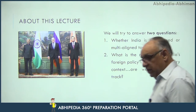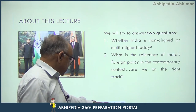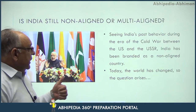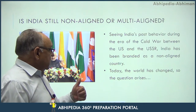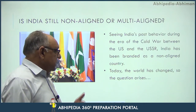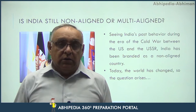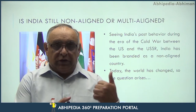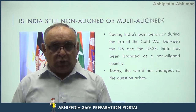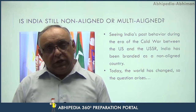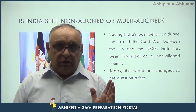Are we on the right track? Seeing India's past behavior during the era of the Cold War between the US and the USSR, India has been branded as a non-aligned country. Because before the disintegration of the USSR in 1992-93, and after the Second World War, a very intense Cold War was going on between the US and the USSR. During that period, India was a big advocate of non-alignment.